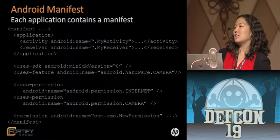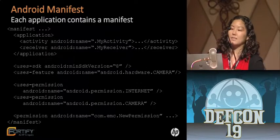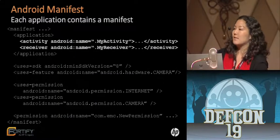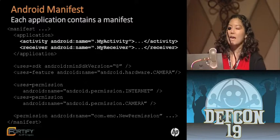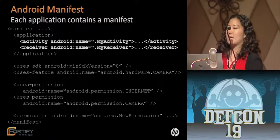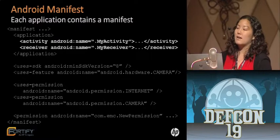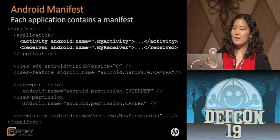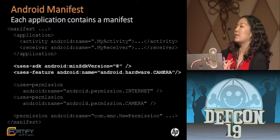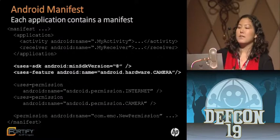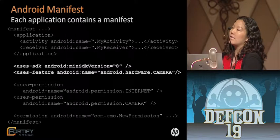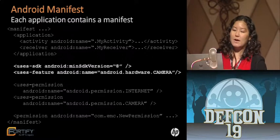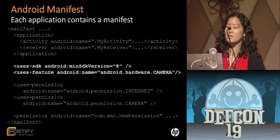Each application contains a manifest, and the manifest does a couple of things. First, it declares application components — as you can see in this example Android manifest, there's a MyActivity and a MyReceiver declared. If the developer doesn't declare the components here, the system won't know about them. The manifest also specifies application requirements such as platform versions, input configurations, or specific hardware requirements. In this example the developer is requesting the camera feature and requiring the minimum SDK version to be 8.